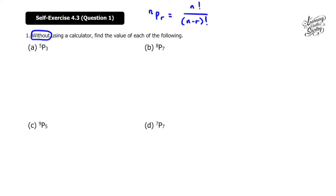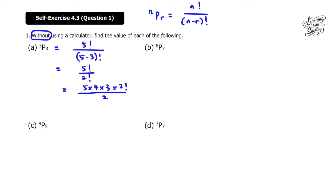Let's solve for A. 5P3 means it's 5 factorial over (5 minus 3) factorial, which is equal to 5 factorial over 2 factorial, which is equal to 5 times 4 times 3 times 2 factorial over 2 factorial. We can cancel out the top and bottom 2 factorial. So 5 times 4 is 20, times 3 is 60. The answer is 60.